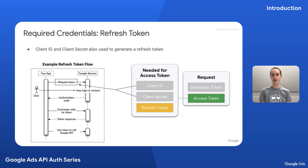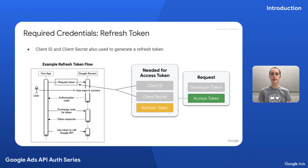First, you'll use the client ID and client secret to generate something called a request token. That request token is used to generate a URL where a user can log in with their Google account. Upon doing so, you'll receive an authorization code, which you can use to retrieve a refresh token in a subsequent request. Using that refresh token, you can then generate an access token, which can be ultimately used to make API requests. This sounds like a lot of work, but keep in mind that many of these steps are abstracted away when using the client libraries, making the process easier.